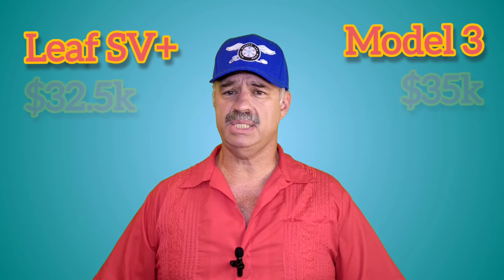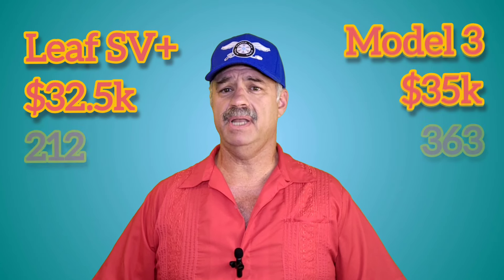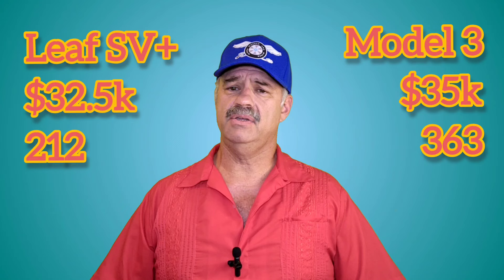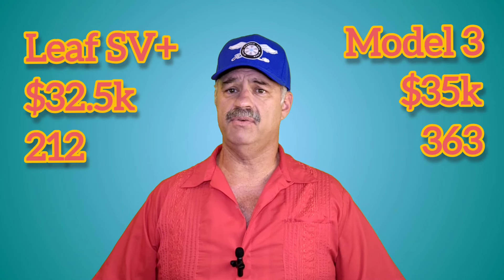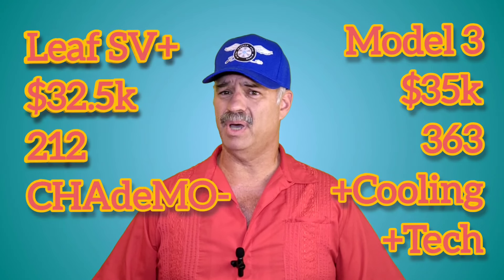So, this version of the LEAF would be just slightly cheaper than this Model 3 and would be 159 miles short on the range. Also, this doesn't include the fact that it doesn't have an active cooling system, all the Tesla's tech, and you would still be using CHAdeMO.